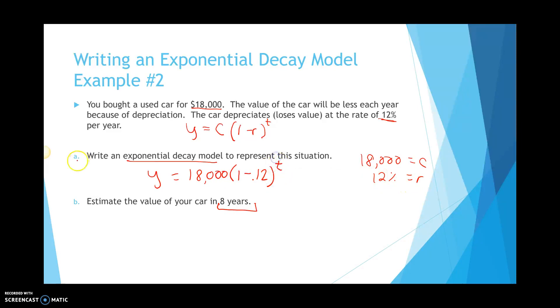For a, it doesn't give us a specific time, whereas b, it gives us our time in eight years. So, I'll plug in 8 for t. So, it's y equals 18,000, 1 minus 0.12 raised to the eighth power.